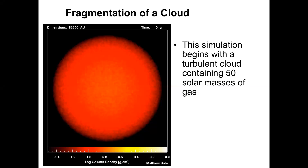Hi friends, welcome back. We were talking in the previous video about where in the interstellar medium these stars tend to form. I want now to talk about how they actually form, what that actually looks like. The cartoon version is a giant spherical ball of gas all collapsing uniformly into a single star. That is almost certainly never how it happens.